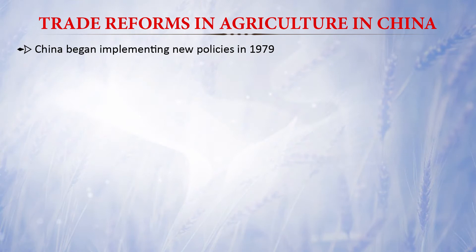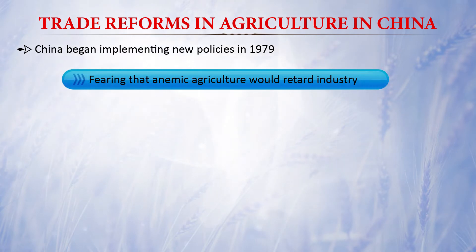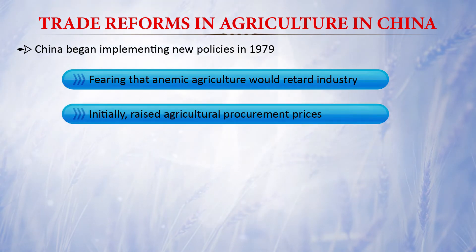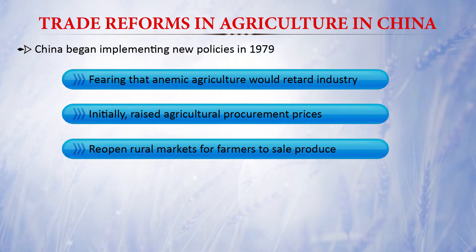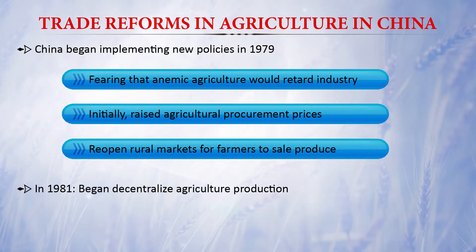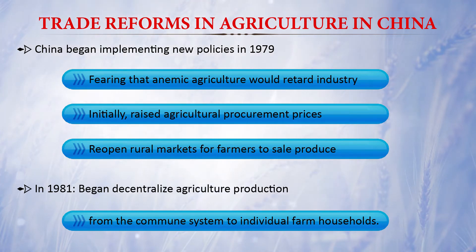China began implementing new policies in 1979 out of fear that poor growth in agriculture would stall industrial growth. They adjusted agriculture procurement prices and reopened rural markets for farmers to sell farm produce. In 1981, China started decentralization of agriculture production, shifting from the community to individual farm households, allowing individual farmers to engage in agriculture production activity.